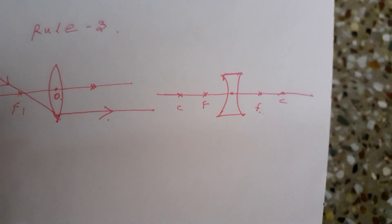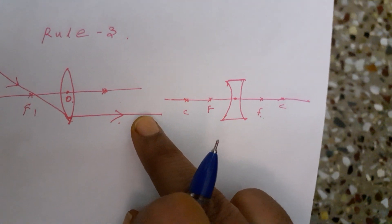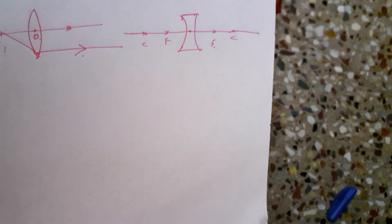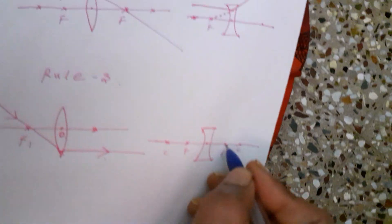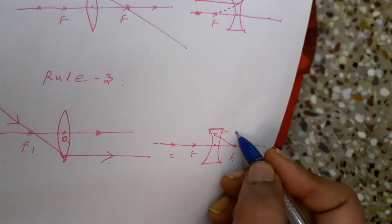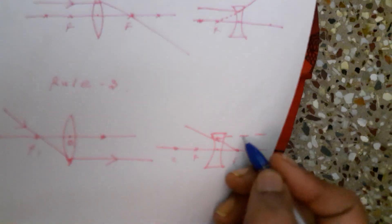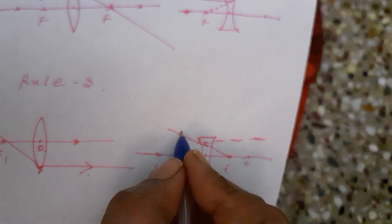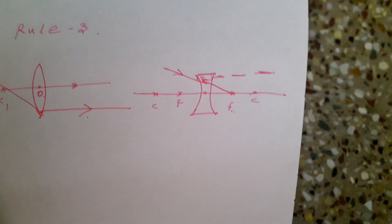The light ray passing through the principal focus, after refraction, will be parallel to the principal axis. Here also, the ray passing through the focus, after refraction, will be parallel to the principal axis. This is your incident ray — after refraction, it will be parallel to the principal axis.